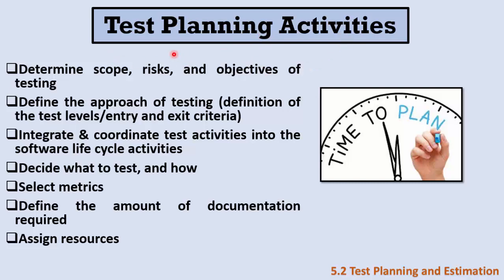What are the activities done in test planning? First, we determine the scope, the risks, and the objectives of testing. We define the approaches we are going to use in testing. We define the test levels — unit, integration, and system — and decide whether we have system integration testing or not. We define the entry and exit criteria for our project.